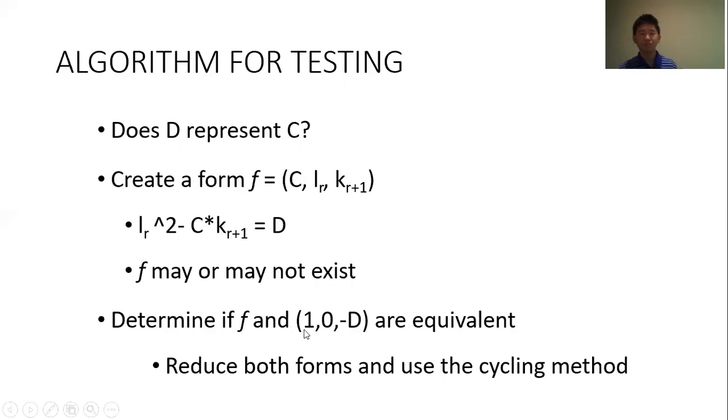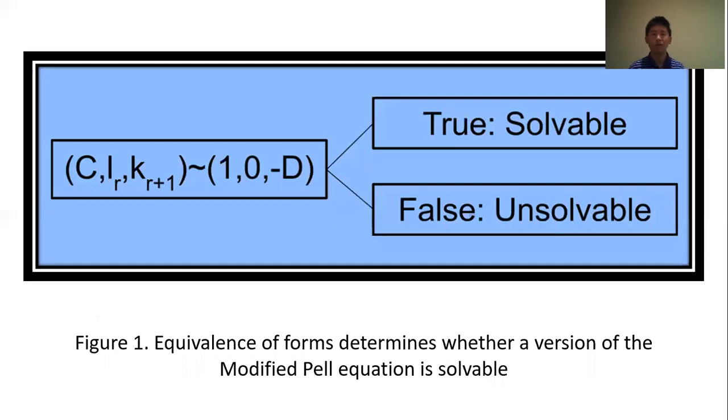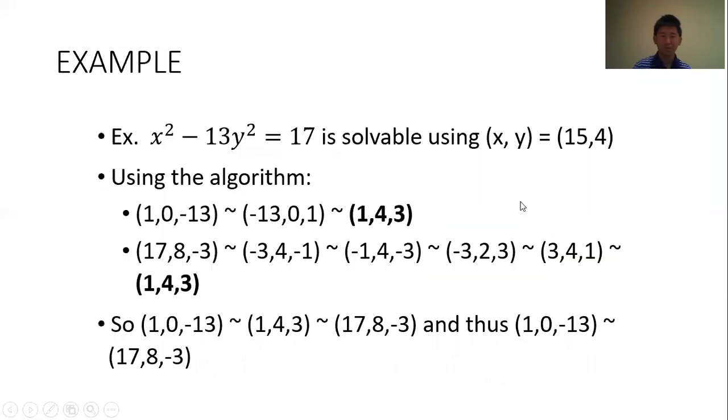But if this form does exist, you have to determine if this form and the form 1, 0, negative D are equivalent. And in order to do that, you first cycle from both of these forms until the form is reduced. And then you continue cycling to determine if these two forms are equivalent or not. And so this graphic here is a quick summary of what it means if the forms are equivalent. So if they are equivalent, then the equation is solvable and D represents C. If these forms are not equivalent, then the equation is not solvable.